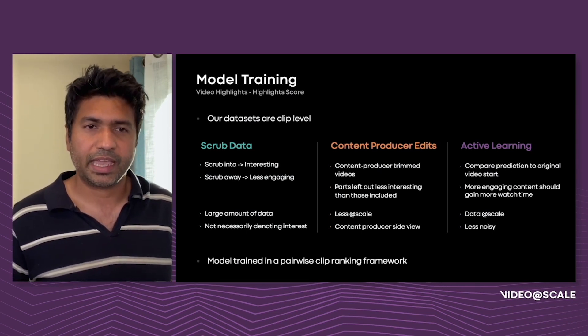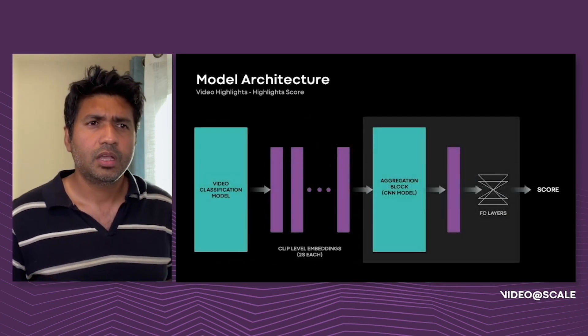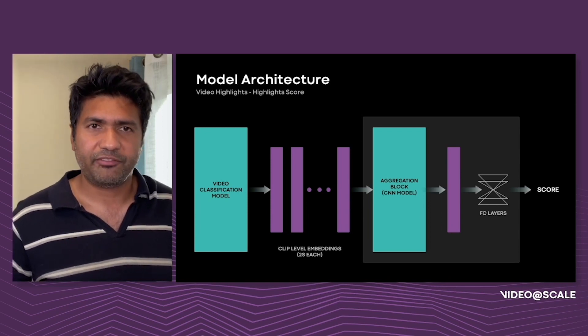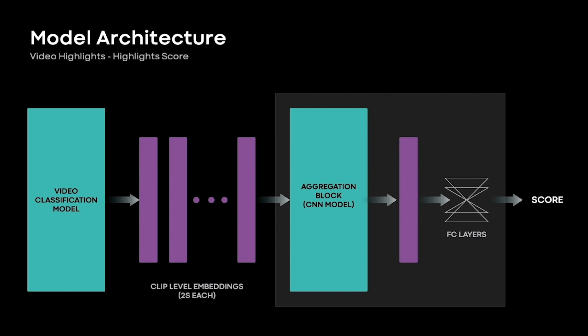Our model predicts an interestingness score for every 2 seconds of the video. We find this granularity provides a good trade-off of noise sensitivity and temporal resolution. We use an in-house multimodal video classification model to generate clip embeddings for every 2 seconds of the video, though this could be any video classification model. A set of these embeddings are then fed into the highlights prediction model. The model head consists of a convolutional neural network that aggregates multiple embeddings to a single embedding, followed by a shallow fully connected network to predict the final score. We keep the weights from the classification trunk frozen when training the highlights prediction task.